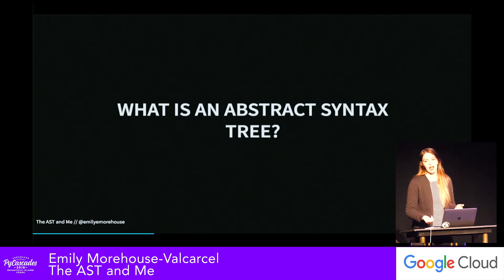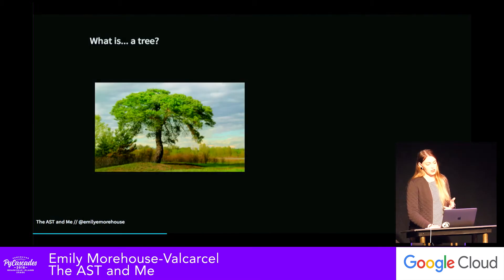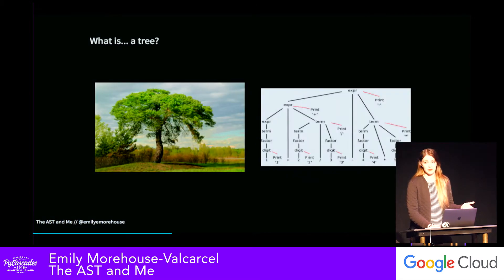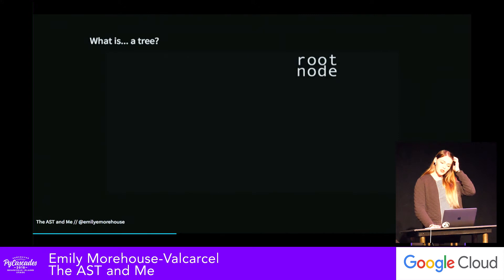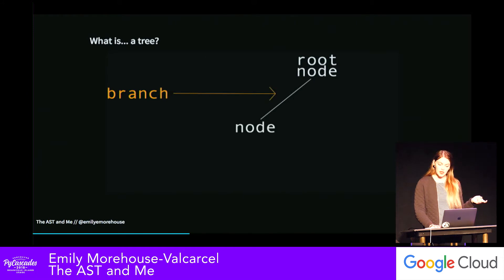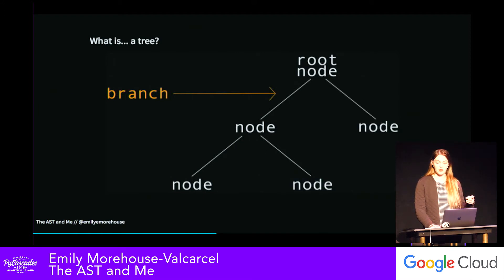What actually is an abstract syntax tree? Essentially you can think of it as a tree that represents the structure of your source code. Trees have one single root node. Nodes can branch off of your root to other nodes, but each node, except for the root, has a single unique parent. When we read a tree, we start at the top node and work our way down as far as we can on our first branch before moving to the next — this is a depth-first traversal.